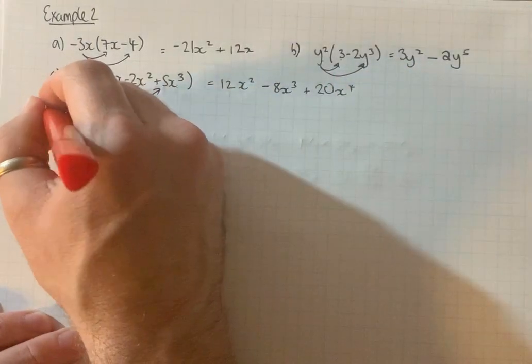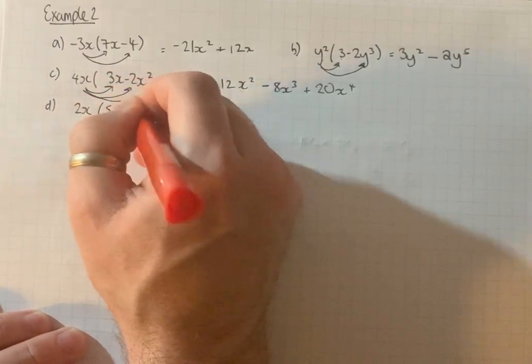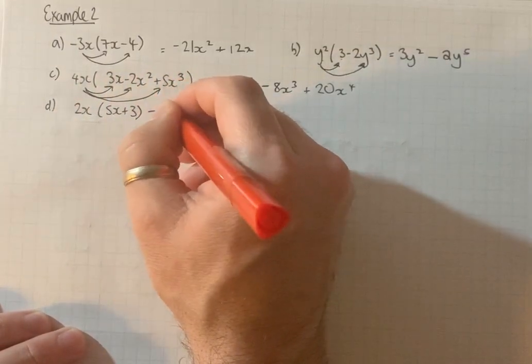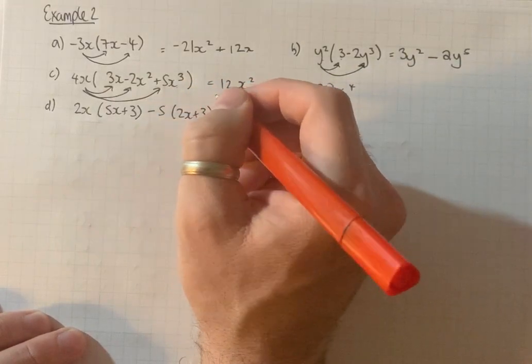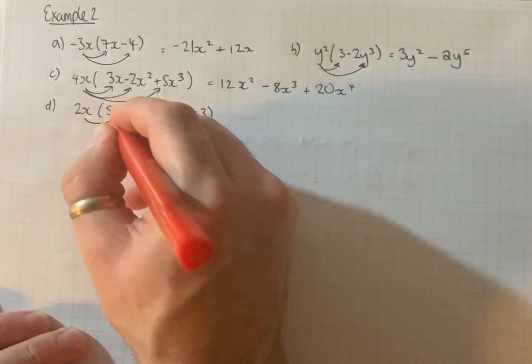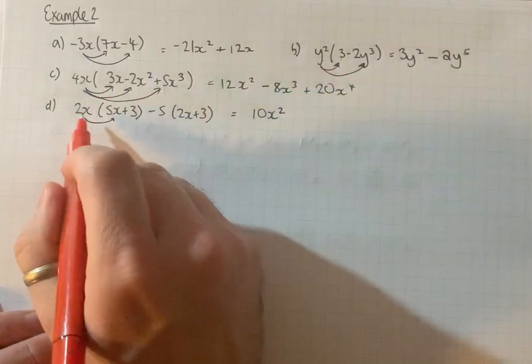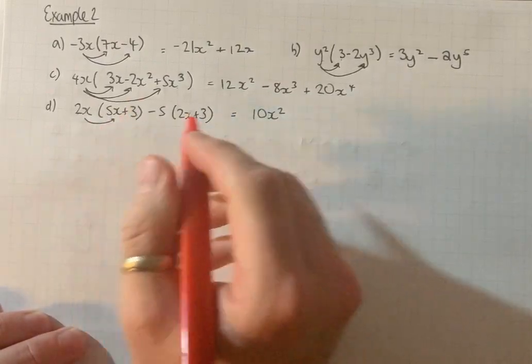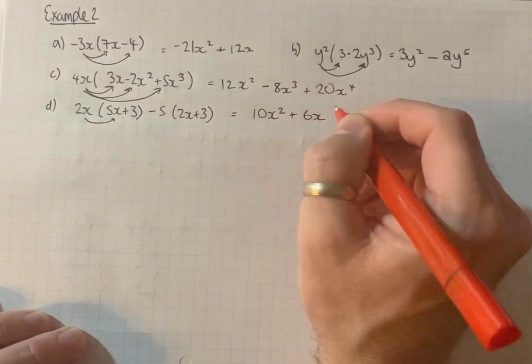Two brackets in this one. 2x times 5x plus 3 take away 5 brackets 2x plus 3. Okay, so 2x times 5x, 10x squared. 2 times 5 is 10, x times x is x squared. Plus 2x times 3 is 6x.